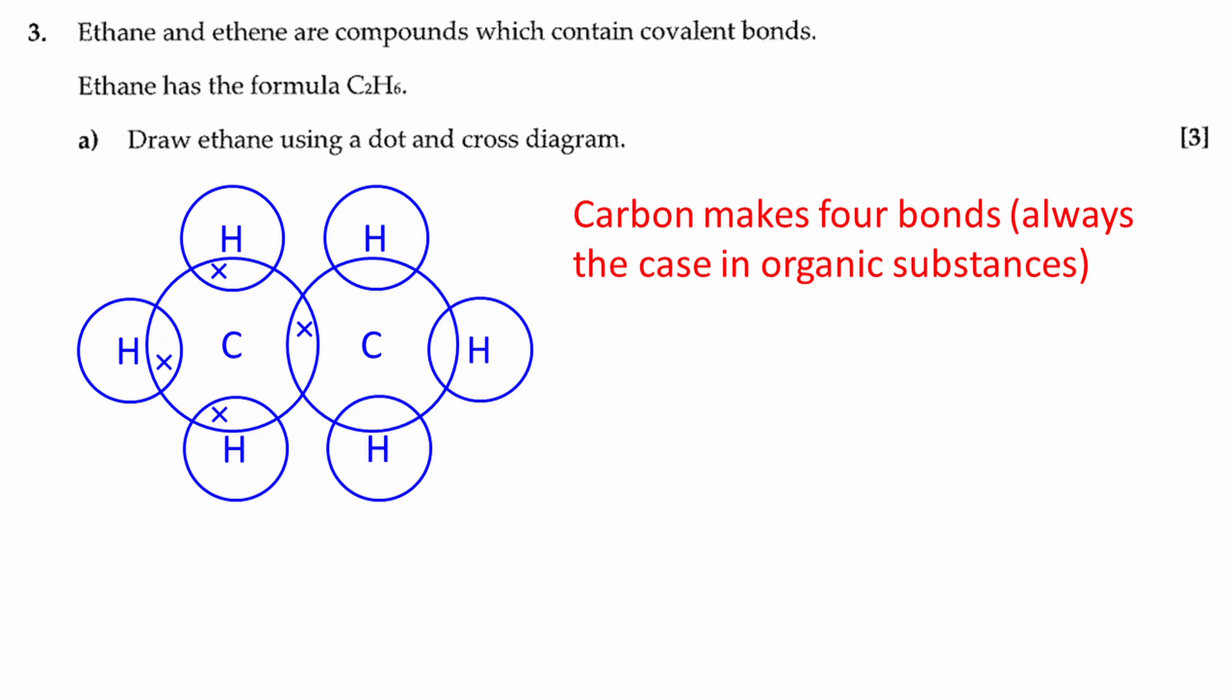The four crosses represent the outer electrons from the carbon atom on the left. This carbon atom makes three single bonds to three different hydrogen atoms and one single bond to a neighboring carbon atom on the right.